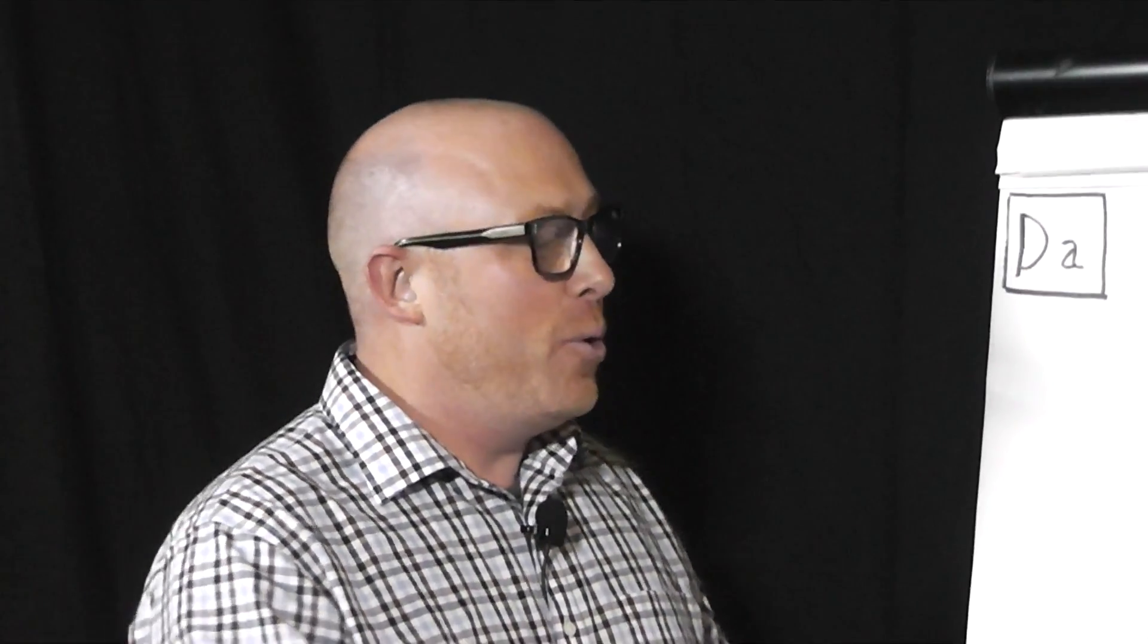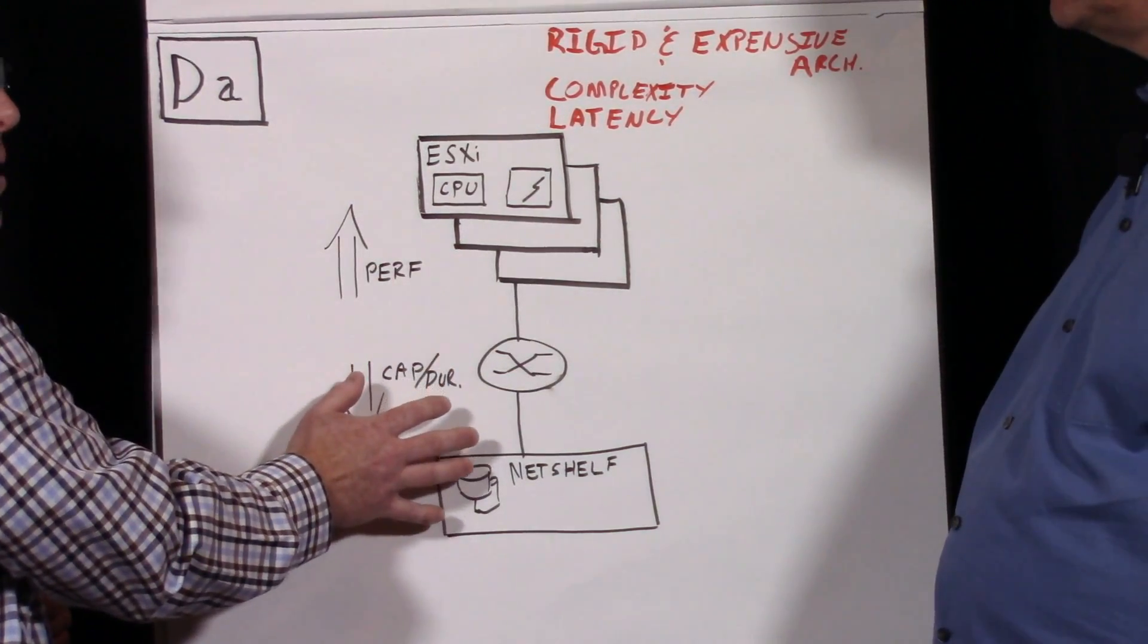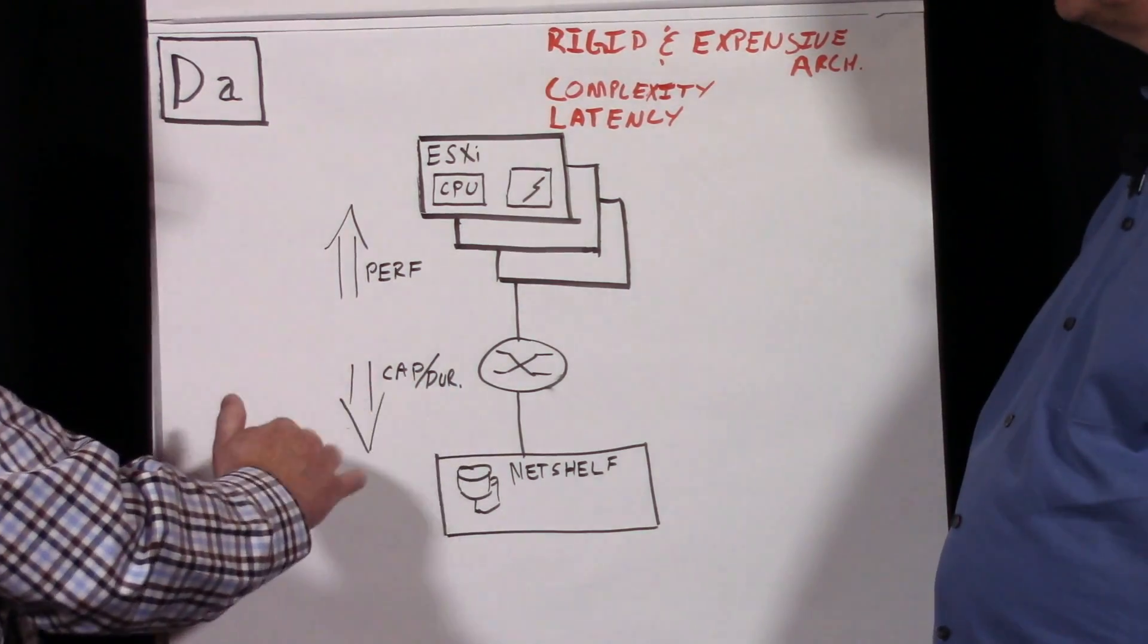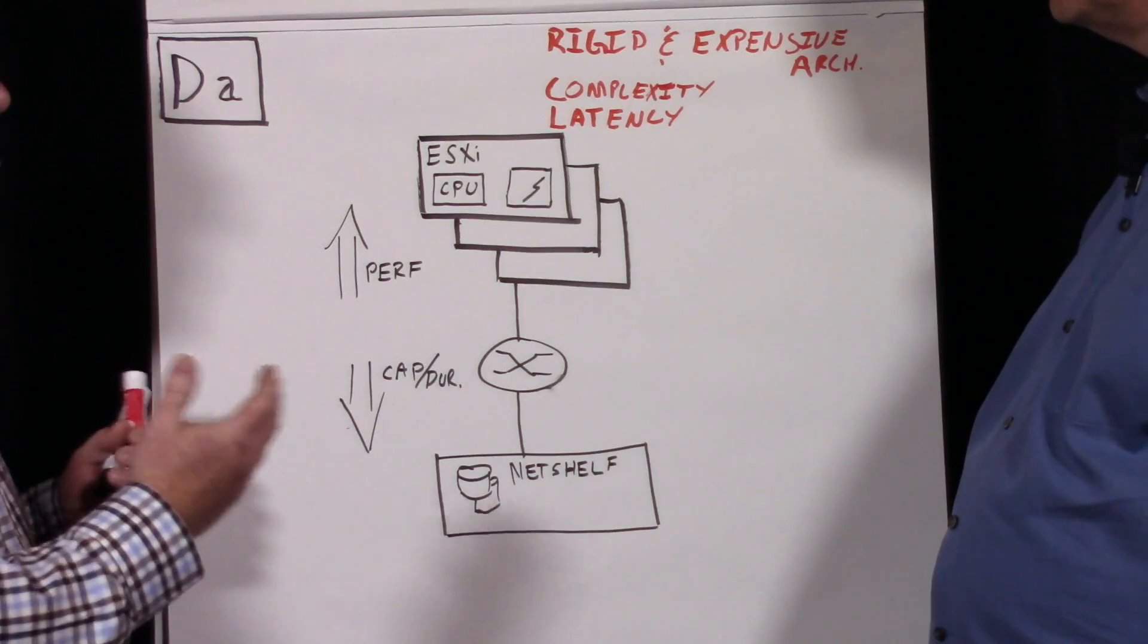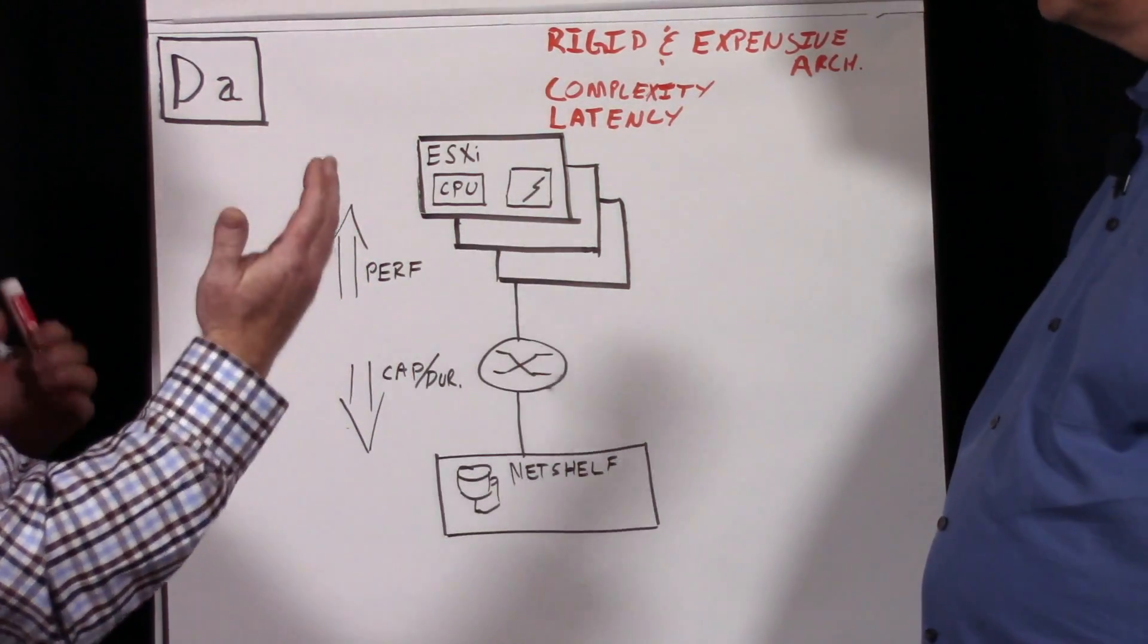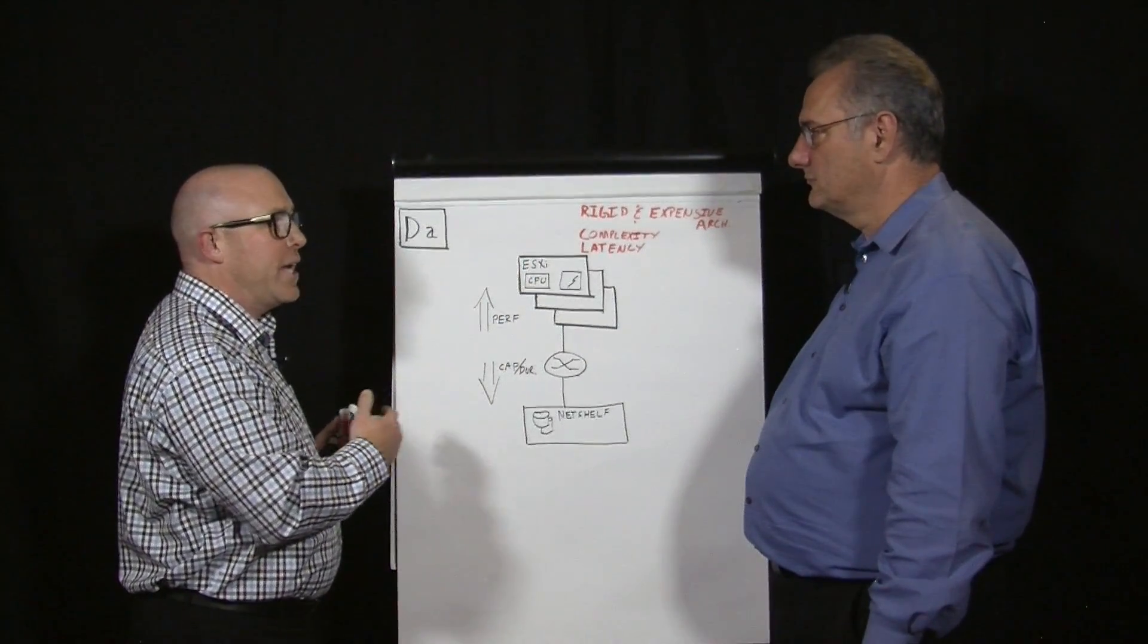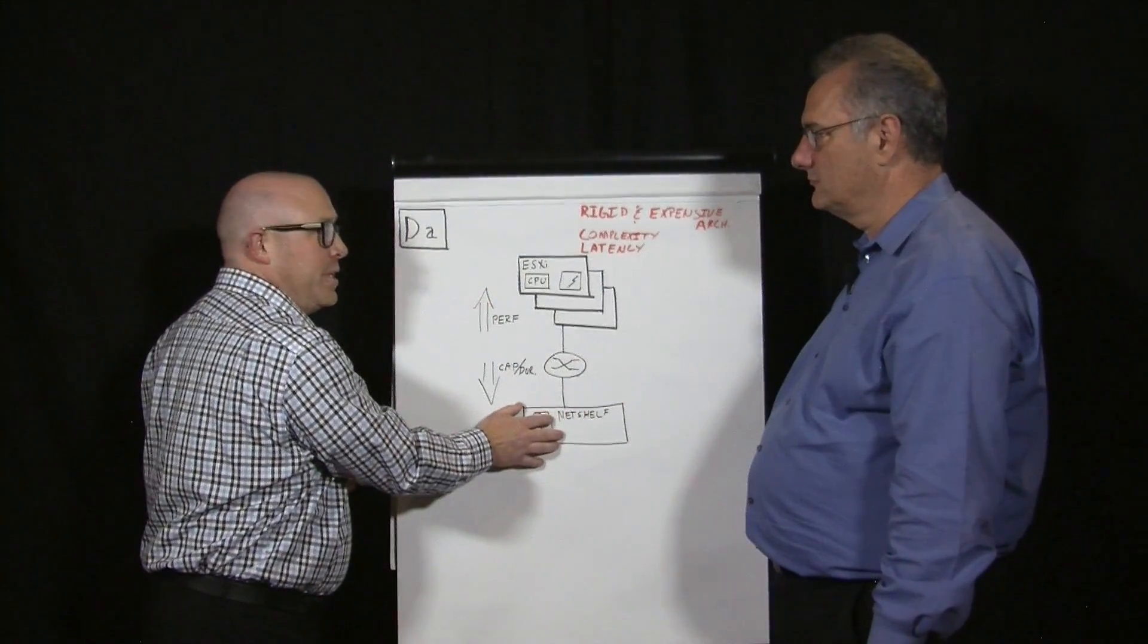So in our OCI, what we've done is the performance now is at the host layer, and the durable layer of the capacity is down on an appliance. Doing that allows us to leverage resources that are already available to us. Customers have CPU that's available that they're not using.